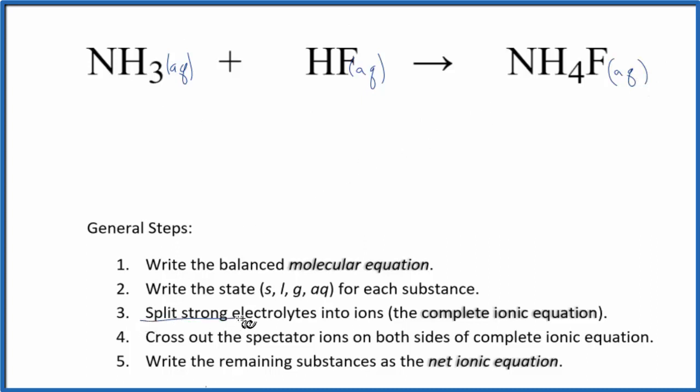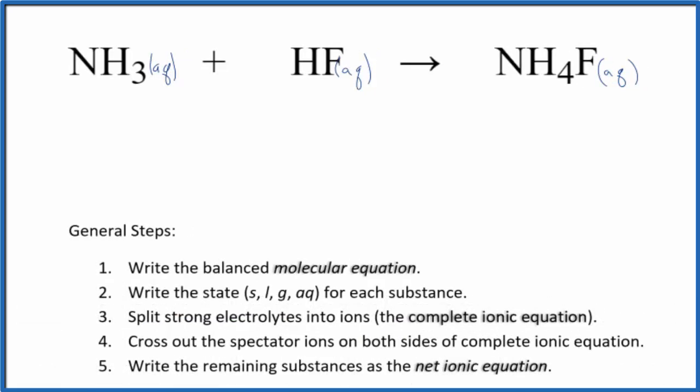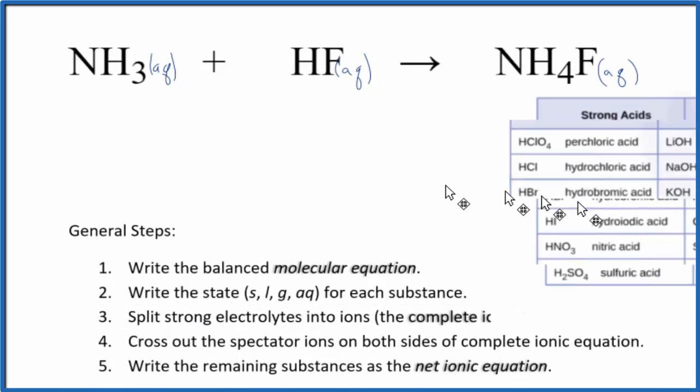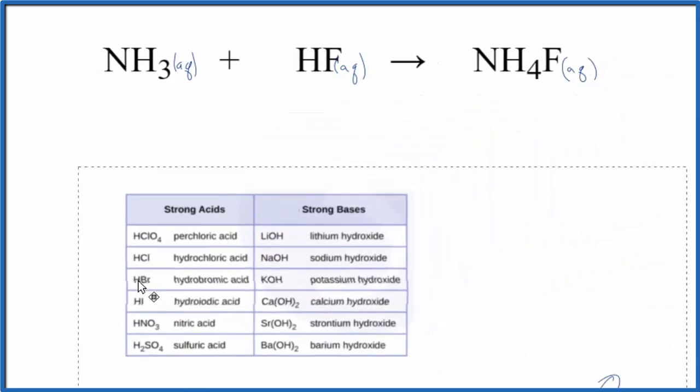Next, we're going to split the strong electrolytes apart into ions to get the complete ionic equation. So to do that, we have to know some things. Let's take a look at this table of common strong acids and bases.